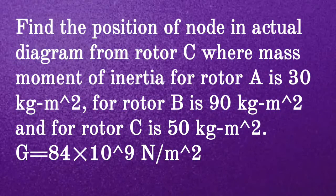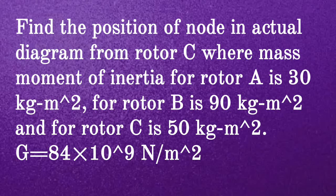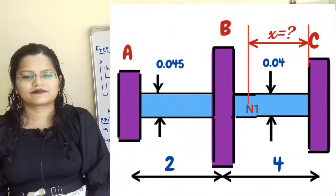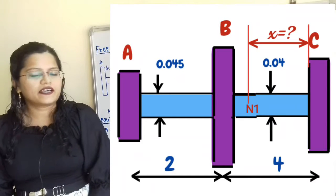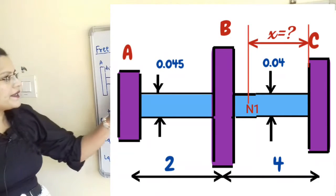Find the position of node in the actual diagram for rotor C, where the mass moment of inertia of rotor A is 30 kilogram meter square, rotor B is 90 kilogram meter square, and rotor C is 50 kilogram meter square. There are three rotors A, B, and C.